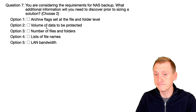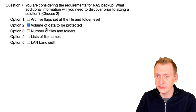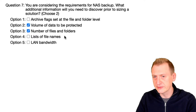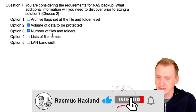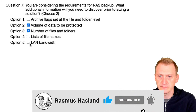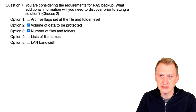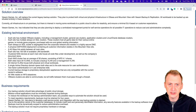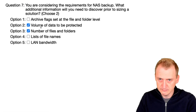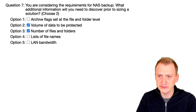Volume of data to protect — we do need to know how much data we're going to protect. Number of files and folders would be helpful. List of file names we don't need, but for sizing we could use that if we're doing exclusions. LAN bandwidth would be good, but we believe we do know what the LAN bandwidth is — we see it's 100 gigs. So I'm going to go with options number two and three.